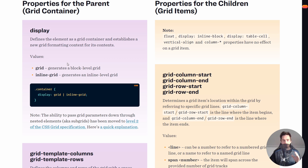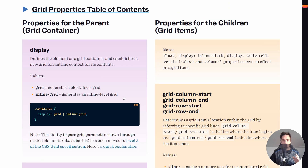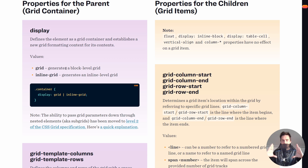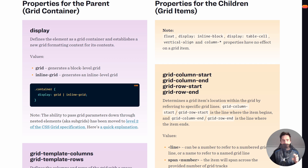Let me start by talking about the left part — the styles we can set to the container. We have a container, some sort of div, and inside the container we have some items. You can think of it as a section on the website being the container, and inside the section we have some articles which are the items.